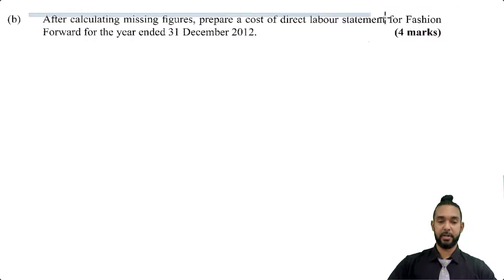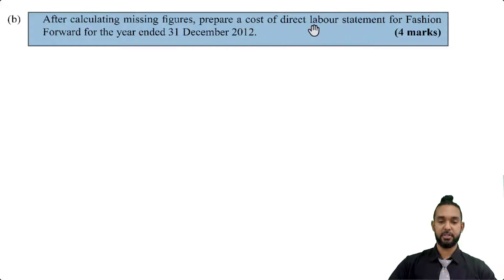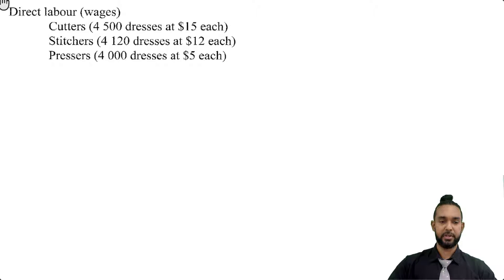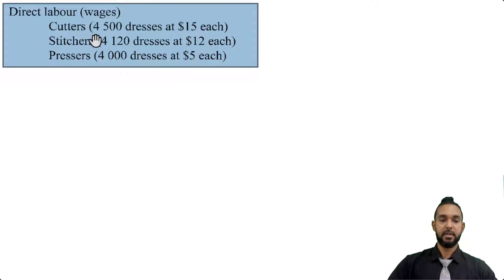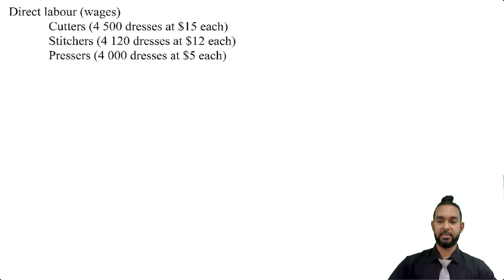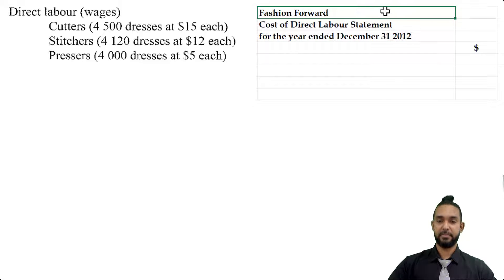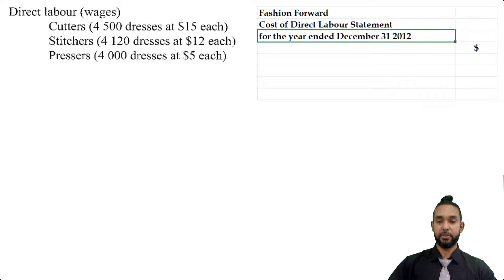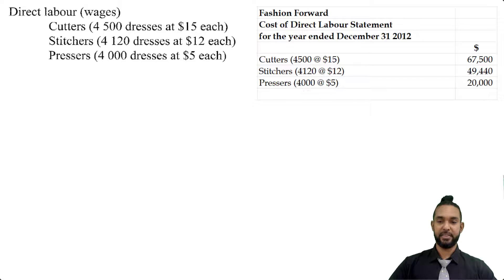Let's take a look at part B. Part B reads: after calculating missing figures, prepare a cost of direct labor statement for Fashion Forward for the year ended 31st December 2012. There's one section here that deals with direct wages. There are three sets of direct labor — cutters made 4,500 dresses at $15 each; stitchers did 4,120 dresses at $12 each; and pressers did 4,000 dresses at $5 each. All we have to do is multiply the quantity by the price and add those items together. We have a cost of direct labor of $136,940.